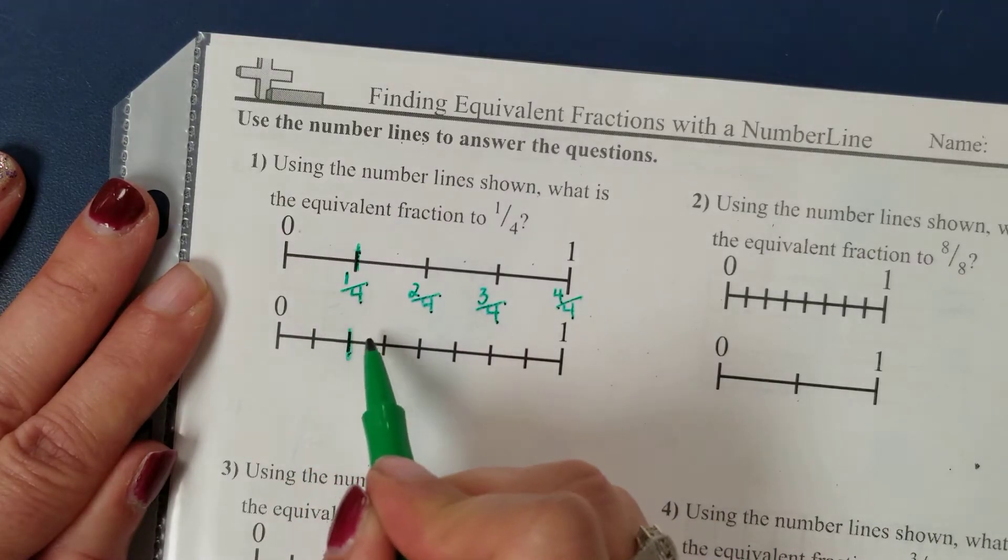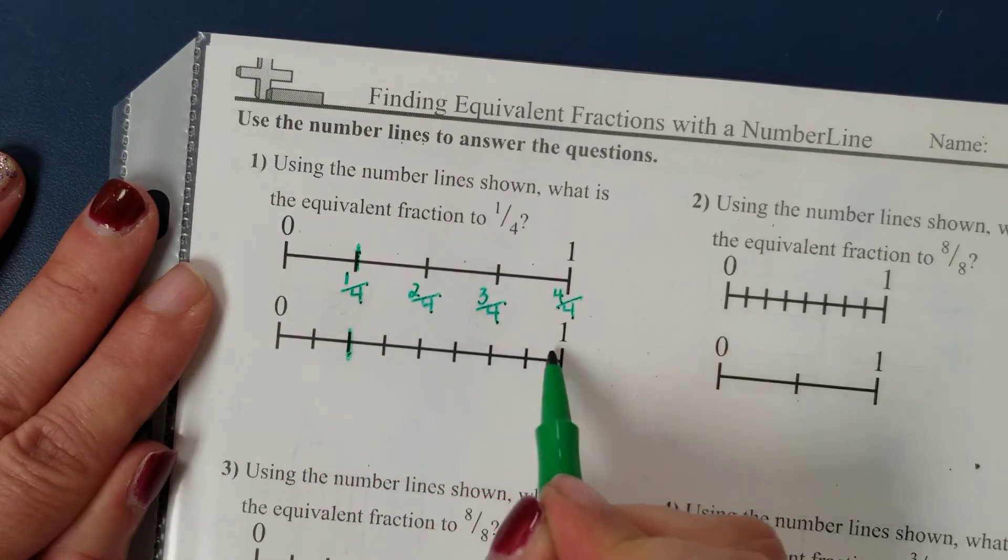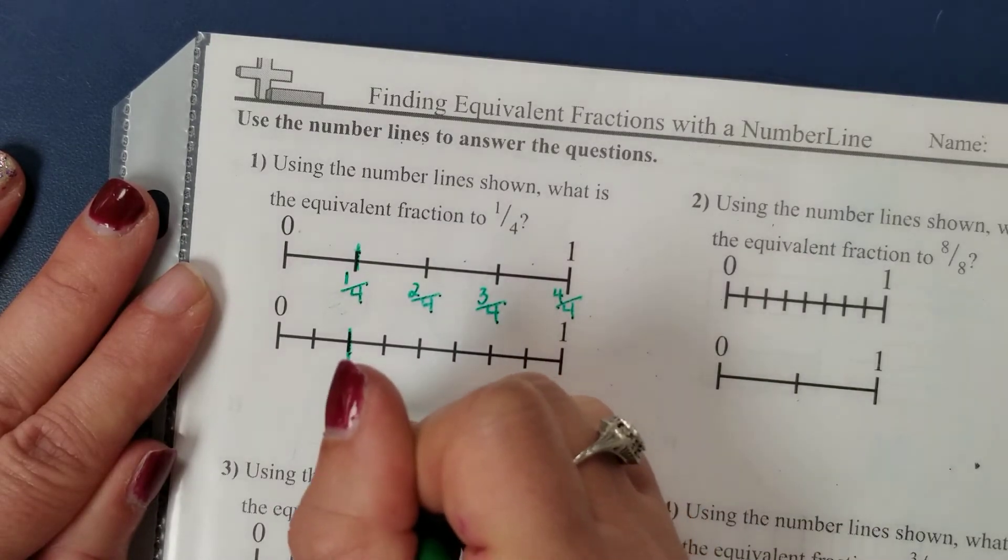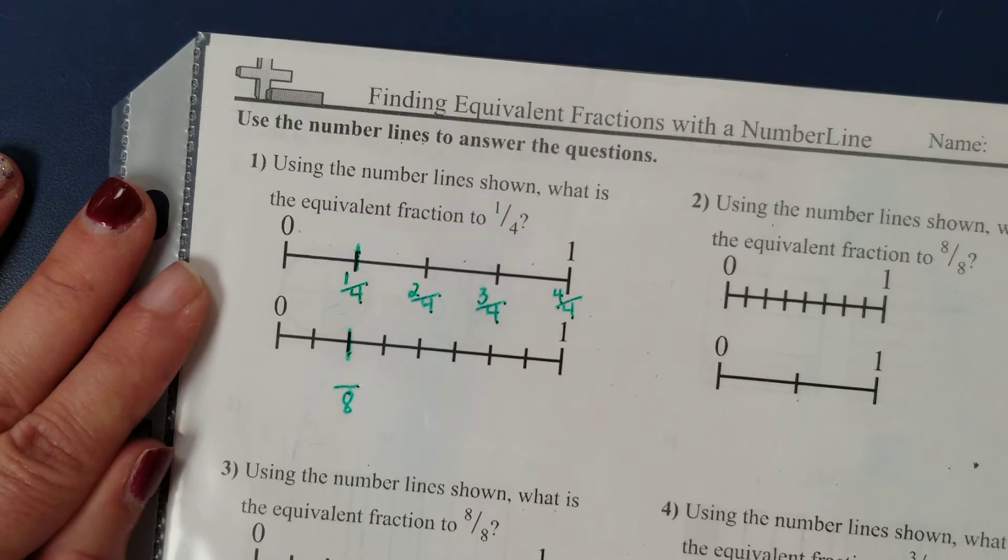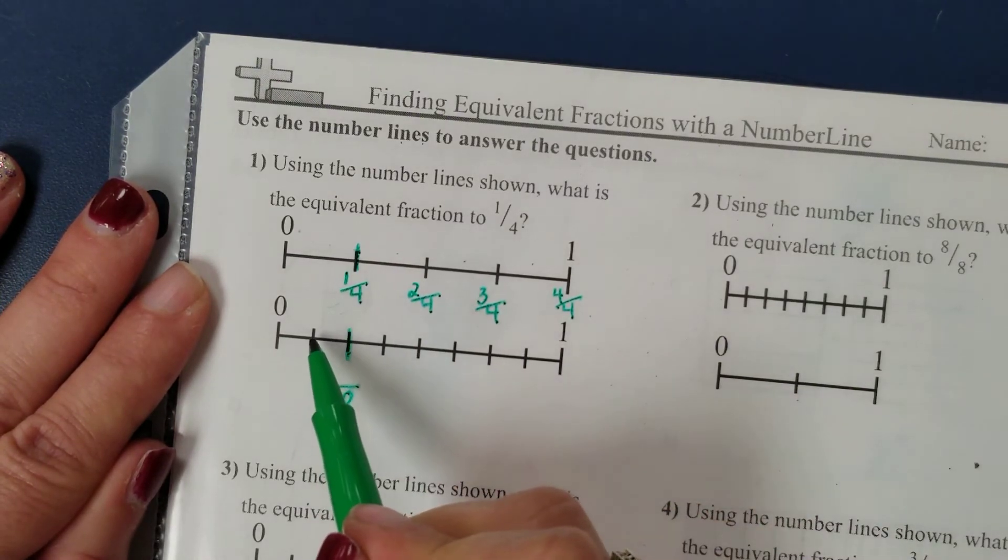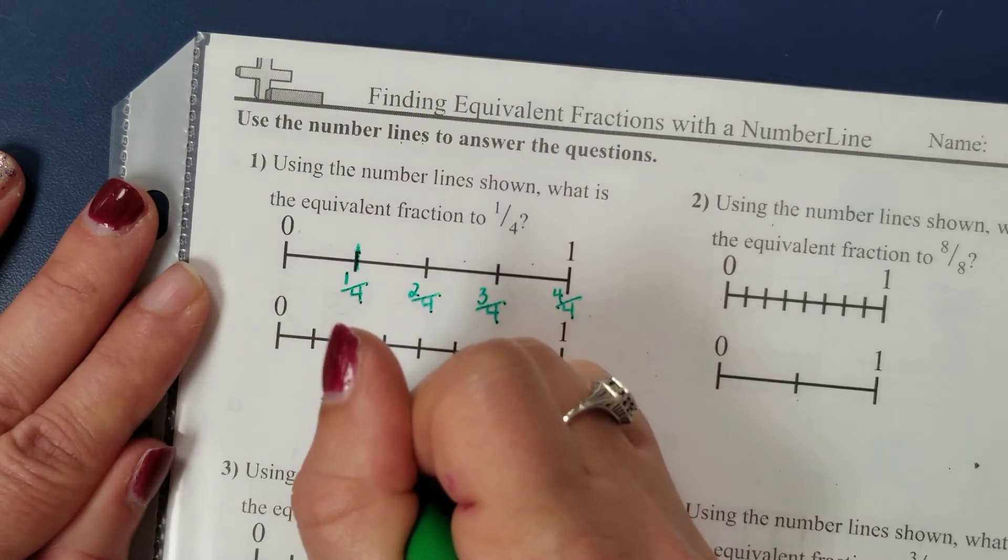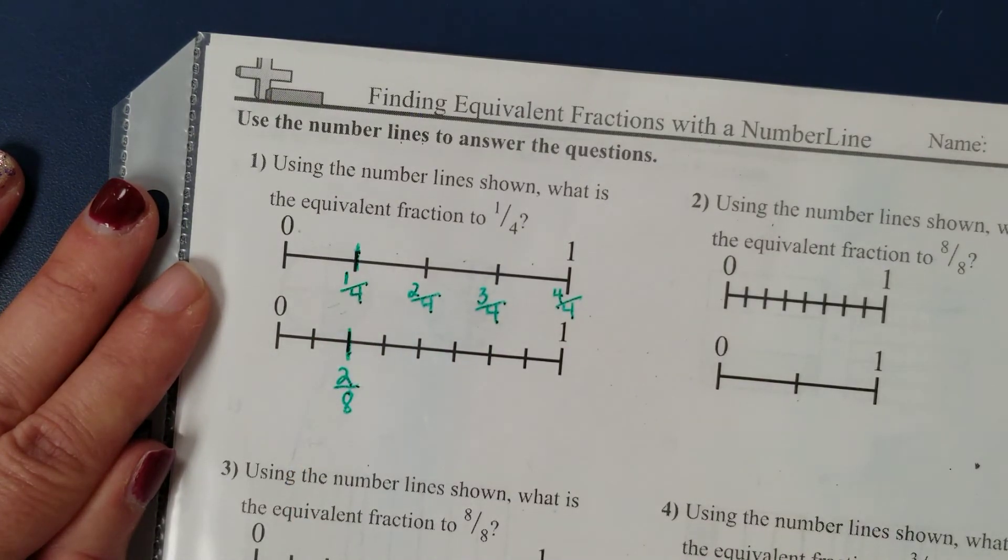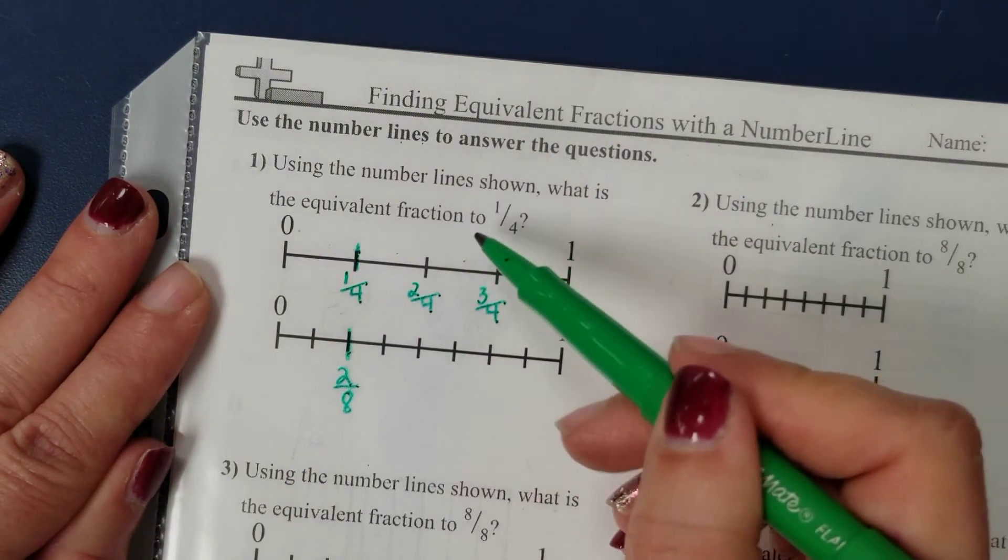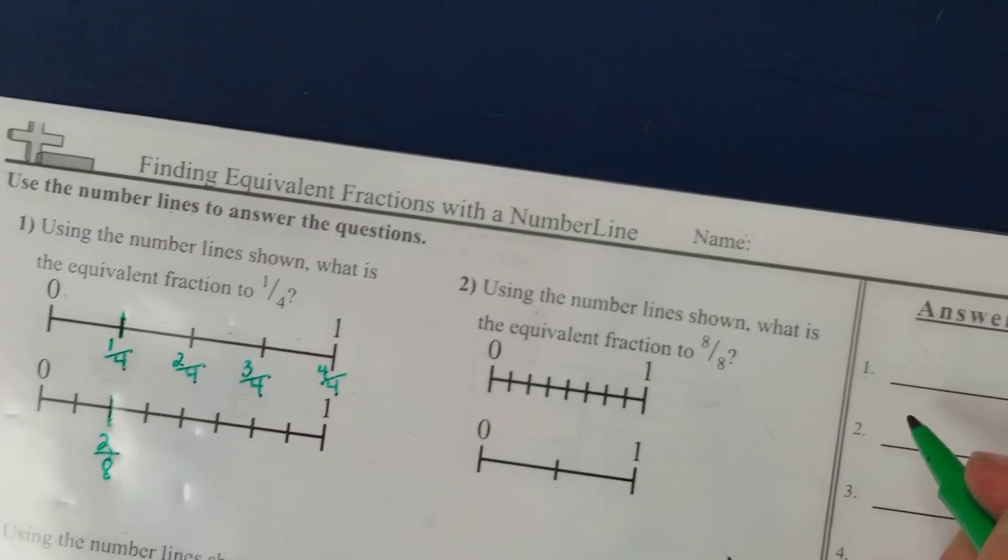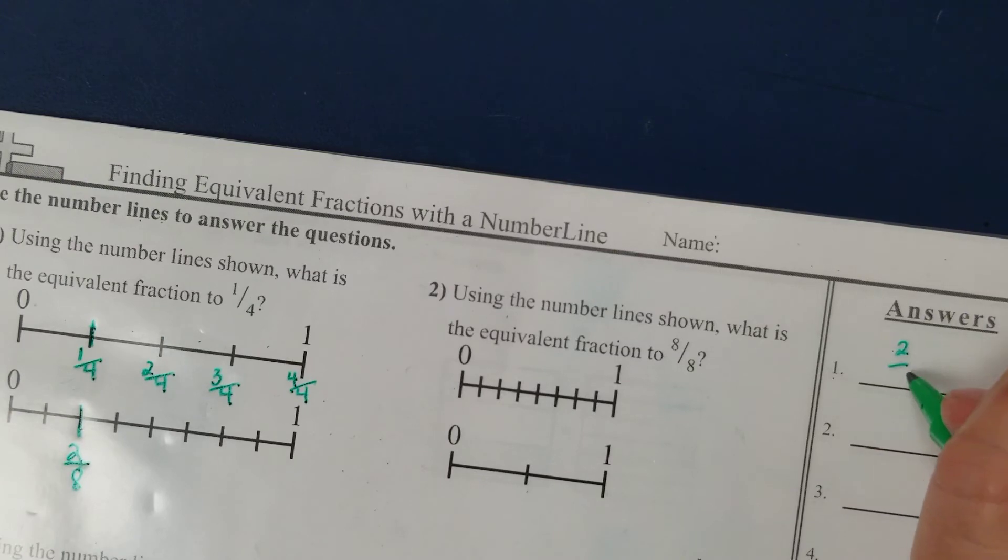So I count one, two, three, four, five, six, seven, eight equal parts. So I'm going to put an eight on my denominator. And if I count over one-eighth, two-eighths, I'm going to get to two-eighths at that mark. So the fraction equivalent to one-fourth is two-eighths.